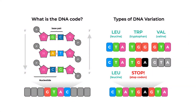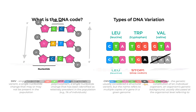For those new to this field, you will find a brief review of the basic terminology, the building blocks of DNA code, and various types of DNA variants — synonymous and non-synonymous mutations, frequency of variants, single nucleotide polymorphisms, and copy number variation.